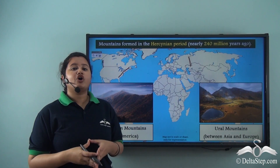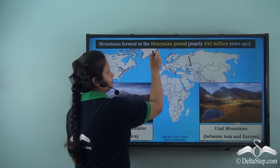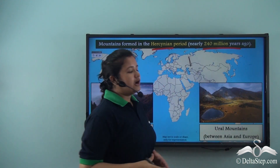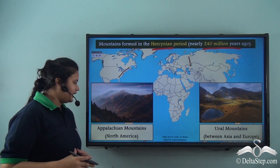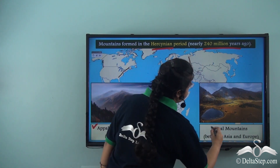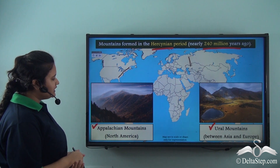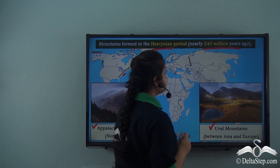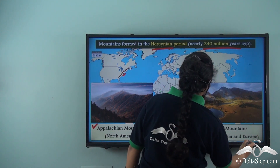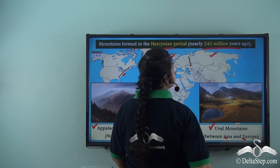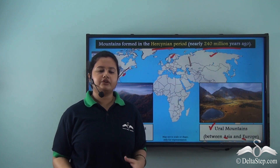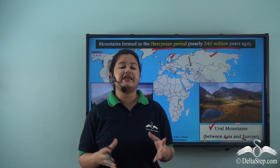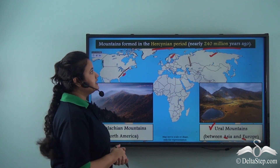The second period of mountain building is the Hercynian period. This can be dated back to 240 million years ago. The mountain ranges that were formed in this period are the Appalachian Mountains and the Ural Mountains. The Appalachian Mountains are located in North America, while the Ural Mountains are located between the continents of Asia and Europe. The Ural Mountains act as a natural boundary between Europe and Asia. Both the Appalachian Mountains and the Ural Mountains are examples of mountain ranges formed in the Hercynian period.